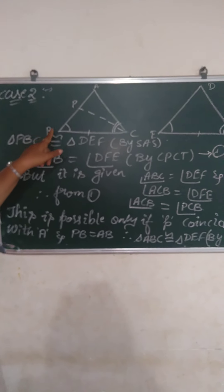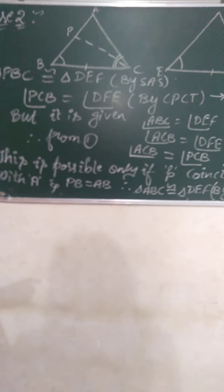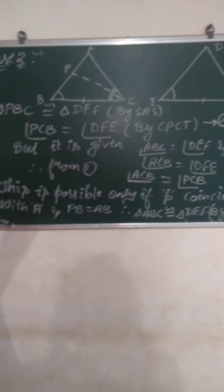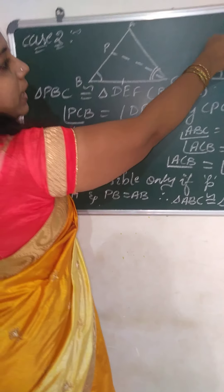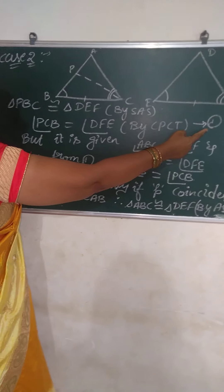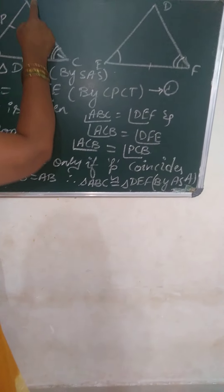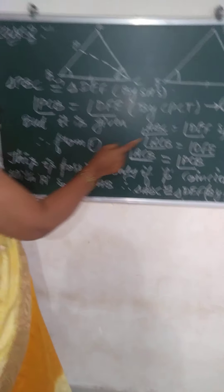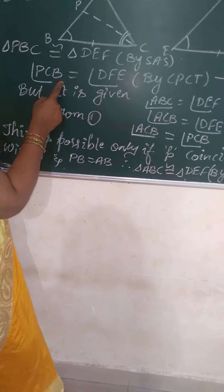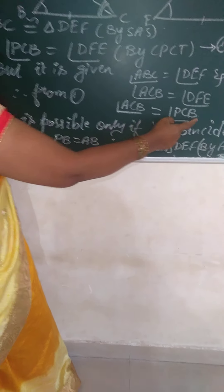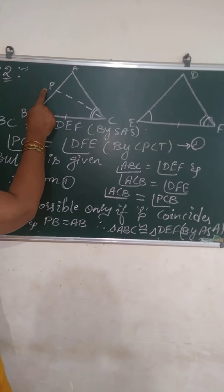When triangle PBC is congruent to triangle DEF, then by CPCT — corresponding parts of congruent triangles — their corresponding parts will be equal. So angle PCB is equal to angle DFE by CPCT. But angle ACB is also given equal to angle DFE. Replacing DFE with PCB, we get that angle ACB equals angle PCB.